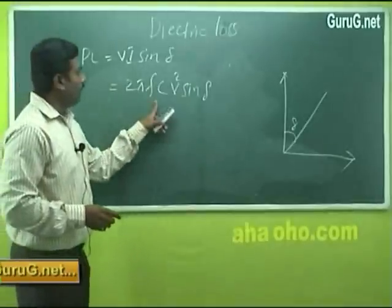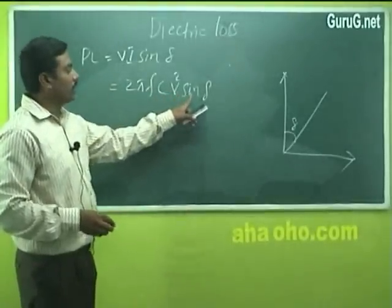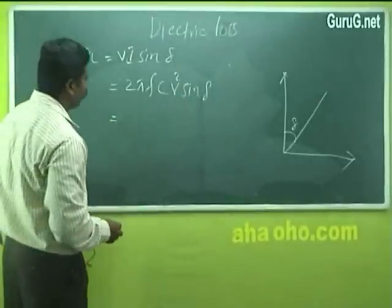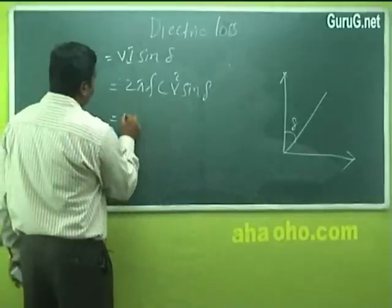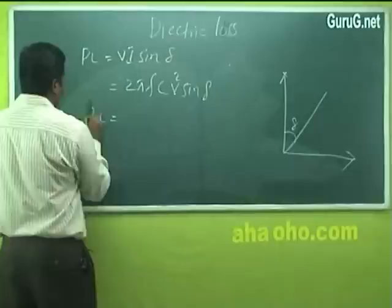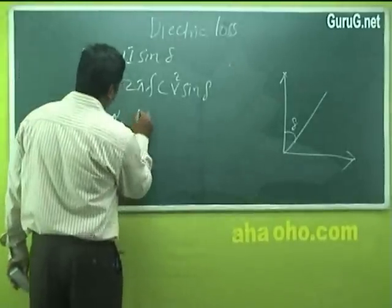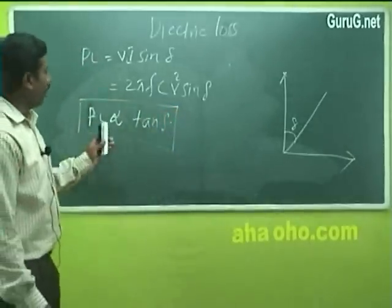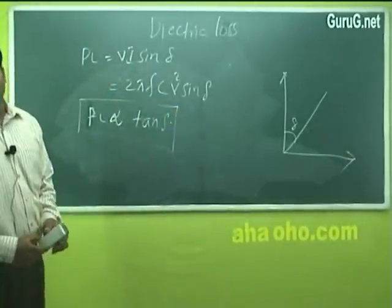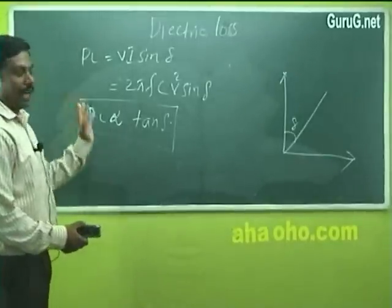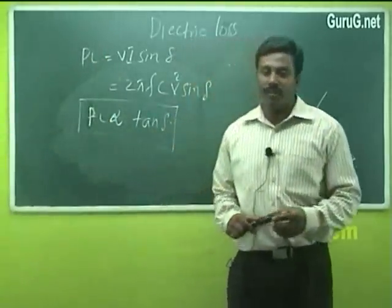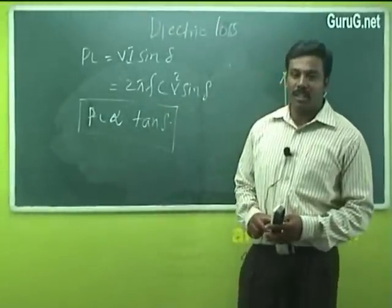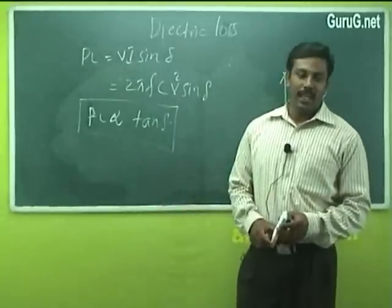In this equation, frequency F, capacitance C, and voltage V are constants. The only variable is δ. Since sinδ is very small, we can replace it with tanδ. Therefore, the power loss PL is directly proportional to tanδ. From this equation, we can understand that power loss directly depends upon the frequency.